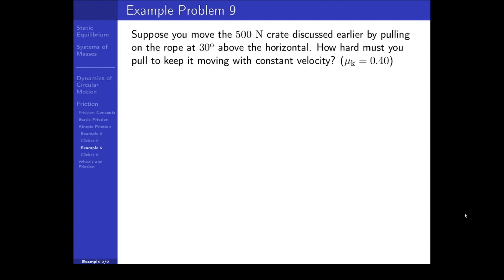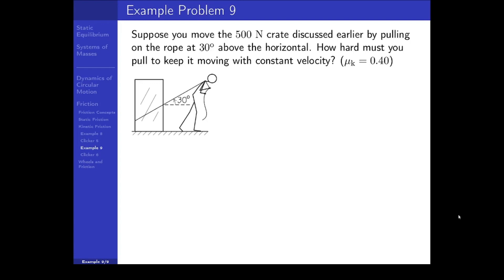Let's look at that crate one more time. Suppose you move the 500 newton crate by pulling on the rope at 30 degrees above the horizontal. How hard must you pull to keep it moving with constant velocity? The coefficient of kinetic friction we found was 0.4. The free body diagram shows the weight, normal force, tension force at an angle, and a friction force opposing the motion and parallel to the surface. The acceleration is zero because velocity is constant. We choose a standard coordinate system aligned with most of the forces.